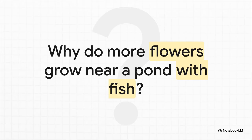So here's the puzzle they had to solve. They had one pond with fish in it, and it was surrounded by tons and tons of flowers. But then, a pond right nearby had no fish and way fewer flowers. So what on earth is the connection between fish in a pond and flowers on the land? It's a real head-scratcher.